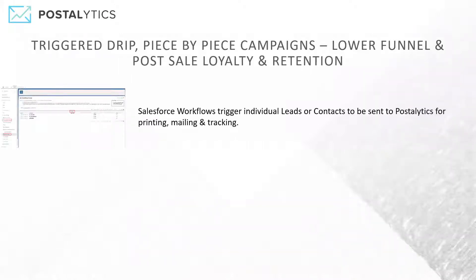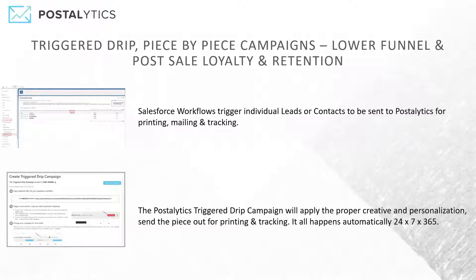Our triggered campaigns will drip individual pieces of mail out one by one. This is an entirely new way to use direct mail, and a lot of folks are using it for lower-funnel, getting close to sale, or post-sale loyalty and retention campaigns. The way that this works is with the Salesforce Sales Cloud workflows, where those workflows will trigger individual leads or contacts to be sent over to Postalytics for printing, mailing, and tracking. All you do is create a Postalytics trigger drip campaign, which generates what's called a webhook. You drop it into your Salesforce workflow, and once you've got it tested, the software will trigger individual pieces of mail to go out when the conditions occur in Salesforce. It's all done for you behind the scenes — once you set it up, you set it and forget it.